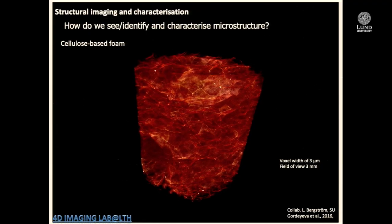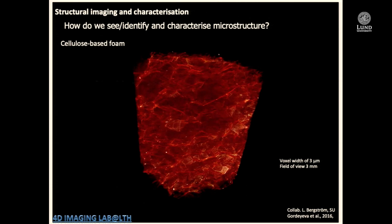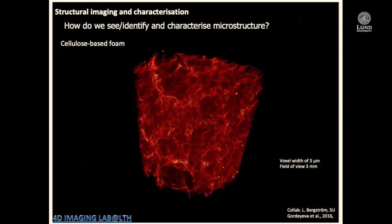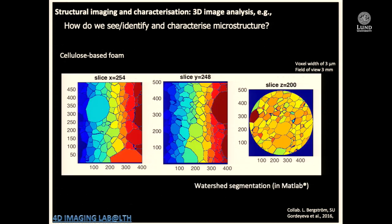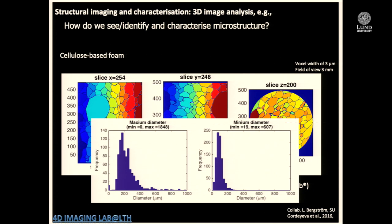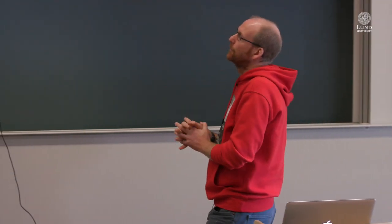One example is a cellulose-based foam — a structure with cells and cell walls. Looking at three orthogonal slices, they can see the cells and walls. Using a binarization and watershed algorithm, they can segment the image into individual cells, label them, and extract characteristics like the distribution of maximum and minimum diameters. This is a relatively simple and manageable case of image analysis.